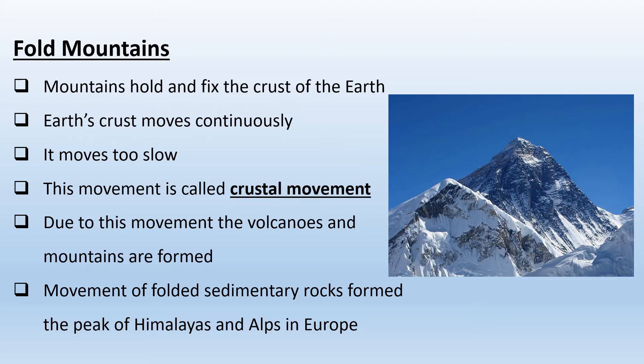Fold mountains are formed due to crustal movement. That movement also gives rise to volcanoes and mountains. The folded sedimentary rocks formed the Himalayas and Alps in Europe. What are sedimentary rocks? Sedimentary rocks are rocks which settle at the bottom of a liquid. For example, if you take a glass of water and put some stones in it, the stones settle down — that settled material is called sedimentary rock. When two surfaces move toward each other due to crustal movement, the sedimentary rock is pushed up and fold mountains are formed.